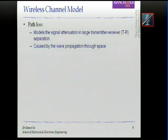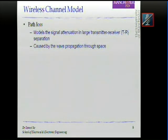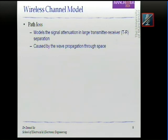I've described the basic fundamental block diagram of a wireless communications system. However, something we have to know is the wireless channel — if we don't know the channel, how are we going to design a system that will work over it? There are channel models, and the most generic categorization divides channels into three parts. The first is path loss, which models signal attenuation over large transmitter-to-receiver separations.